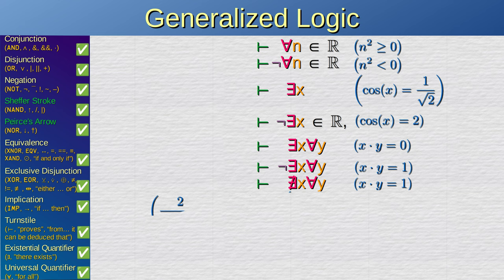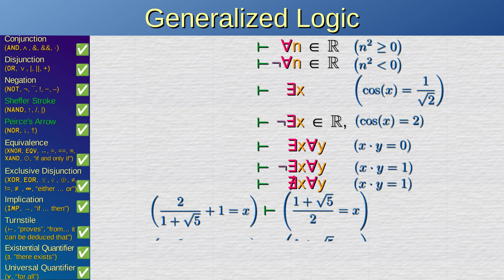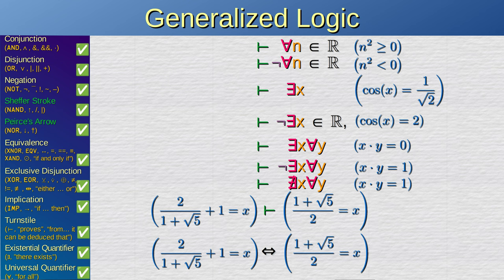And from 2 divided by 1 plus square root of 5 plus 1 equals x, we can conclude that 1 plus square root of 5 divided by 2 equals x. Which is to say that if and only if 2 divided by 1 plus square root of 5 plus 1 equals x, then 1 plus square root of 5 divided by 2 equals x.